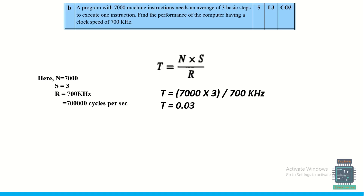For the performance calculation: a program has 7000 machine instructions requiring an average of 3 basic steps per instruction, with a clock speed of 700 kHz. The expression is T = N × S / R, where T is performance, N is number of machine instructions (7000), S is basic steps (3), and R is clock rate. The result is 0.03.